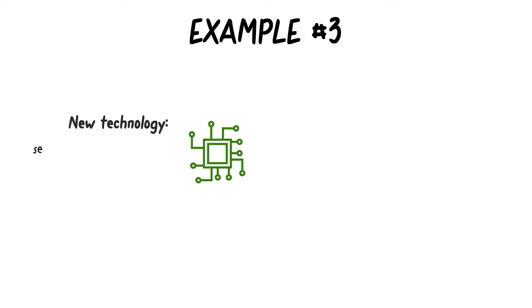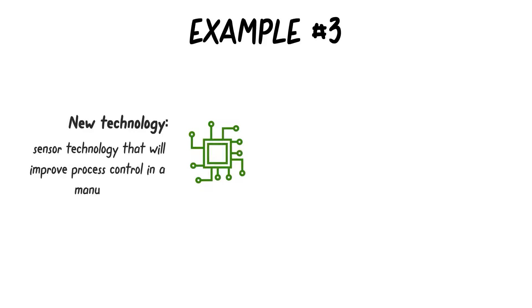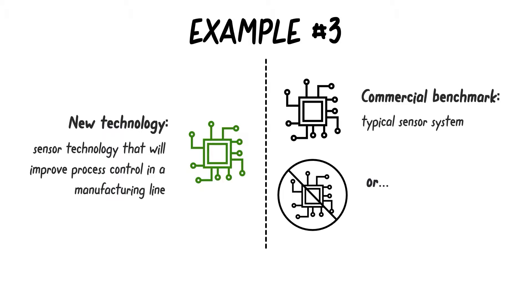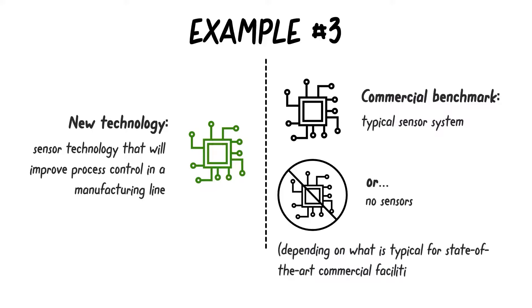Here's one more. If we are analyzing the potential impacts of a new sensor technology that will improve process control in a manufacturing line, the commercial benchmark may be the same manufacturing line with typical sensor systems or with no sensors, depending on what is typical for state-of-the-art commercial facilities today.